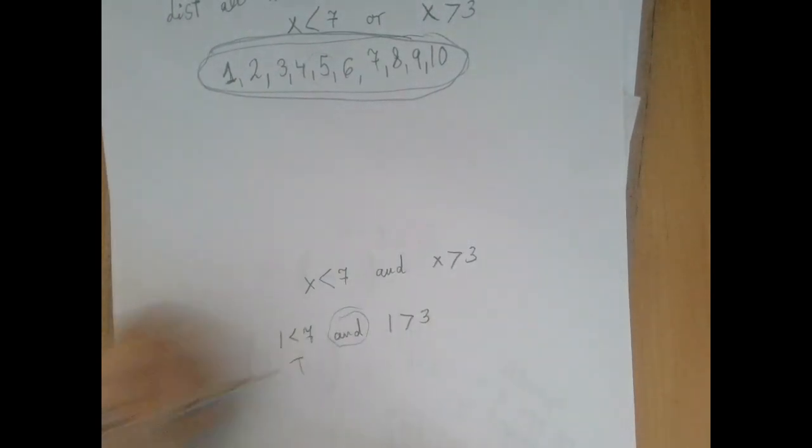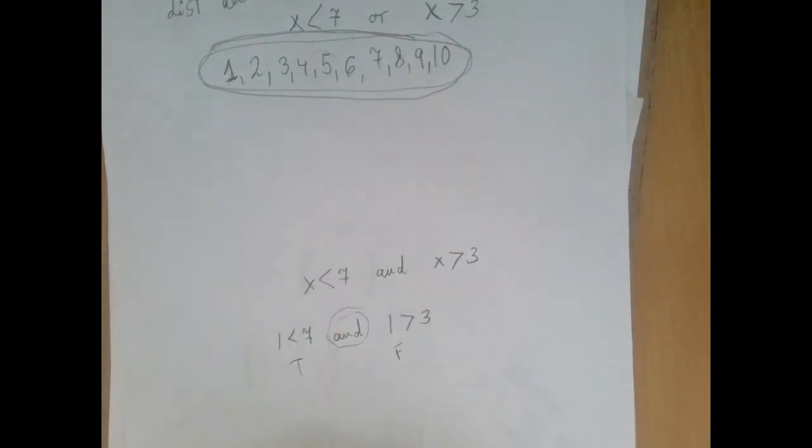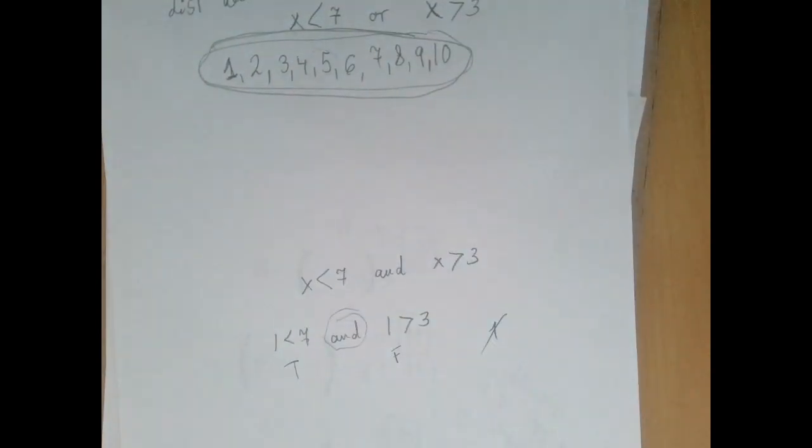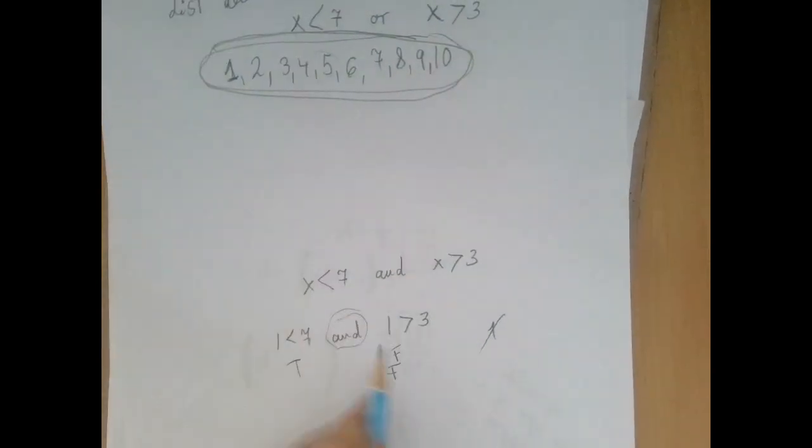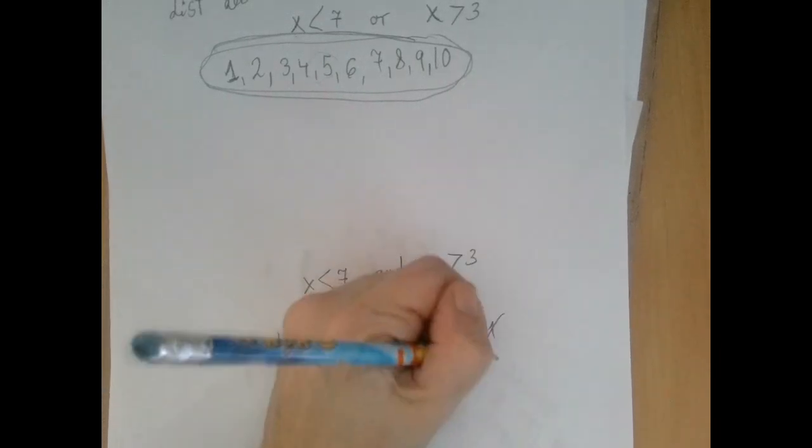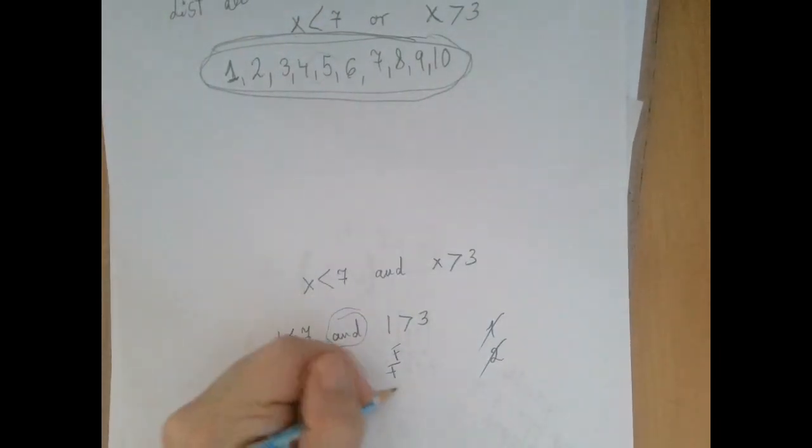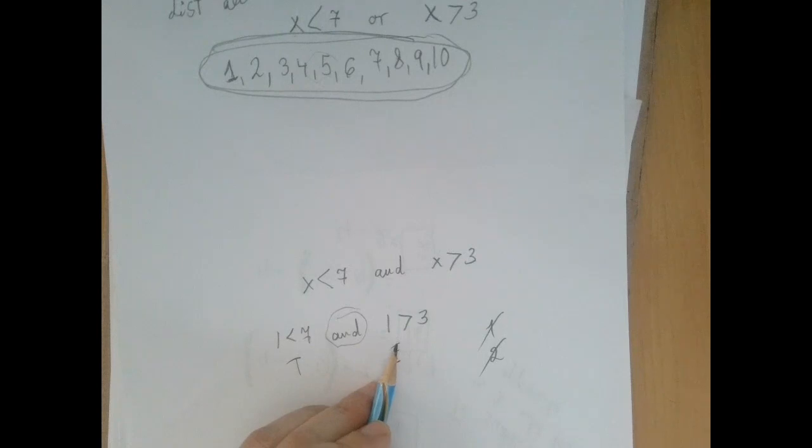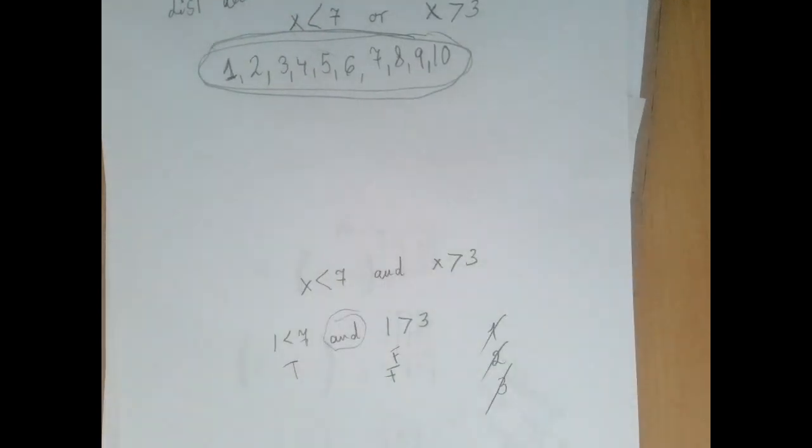Well, this is true, but this is false, right? So 1 is not going to work. What about 2? This one is still going to be false. 2 is not greater than 3, so 2 is not going to work either. 3 is not greater than 3, so 3 is not going to work.